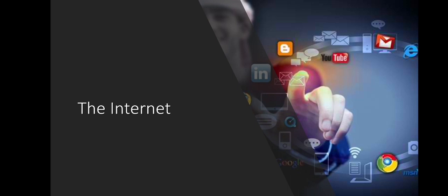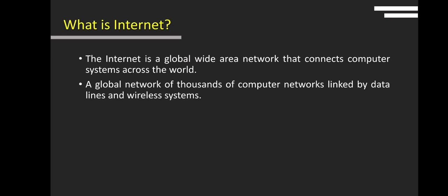The next topic is the Internet. The Internet is a global wide area network that connects computer systems worldwide. It consists of several high-bandwidth data lines that make up the Internet's backbone. These lines connect to major Internet hubs, which distribute data to other locations like web servers and ISPs, or Internet service providers.